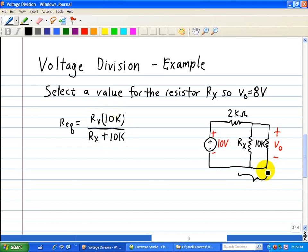If we note that we can reduce this Rx and 10k combination that is in parallel to an R equivalent, and now we note this R equivalent is in series with this 2 kilo ohm resistor, so we can use the voltage division principle.